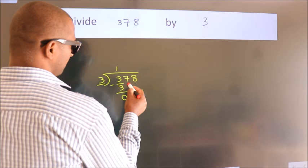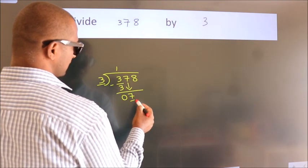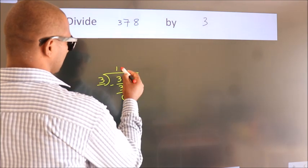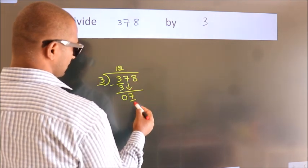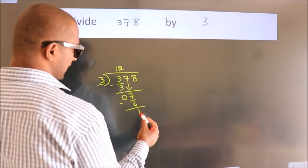After this, bring down the beside number. So, 7 down. A number close to 7 in 3 table is 3 times 2, 6. Now we subtract. We get 1.